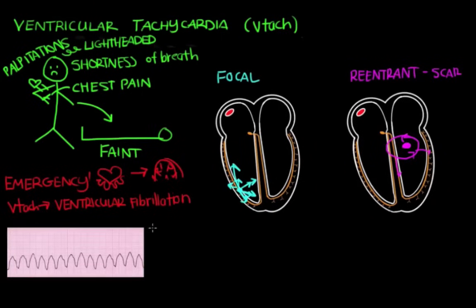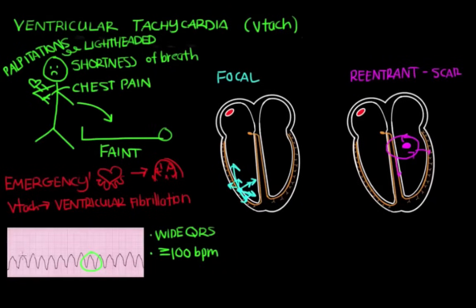We diagnose VTAC with an EKG. On EKG, you see coarse, wide QRS complexes — a wide QRS complex means it is greater than three small boxes. In this example, the QRS complex is bigger than five small boxes, so it's definitely wide. By definition, you'll also have a tachycardia, or heart rate greater than or equal to 100 beats per minute. In this example, the heart rate is somewhere between 150 and 300 BPM — definitely over 100. This is ventricular tachycardia.